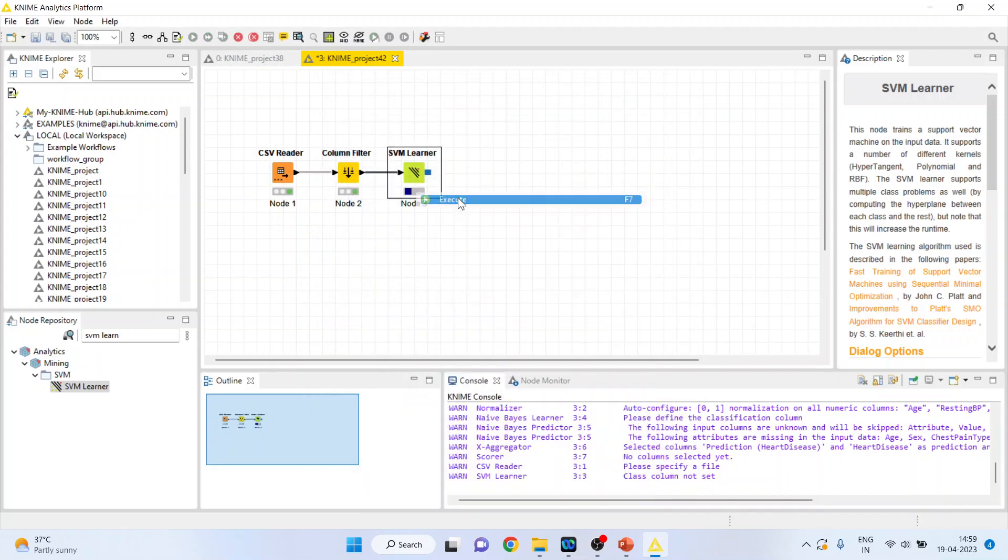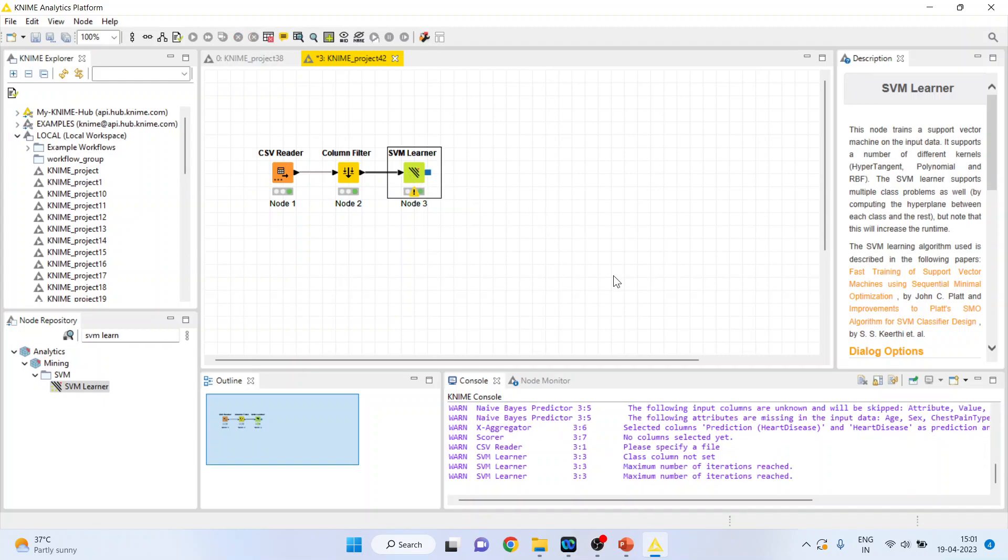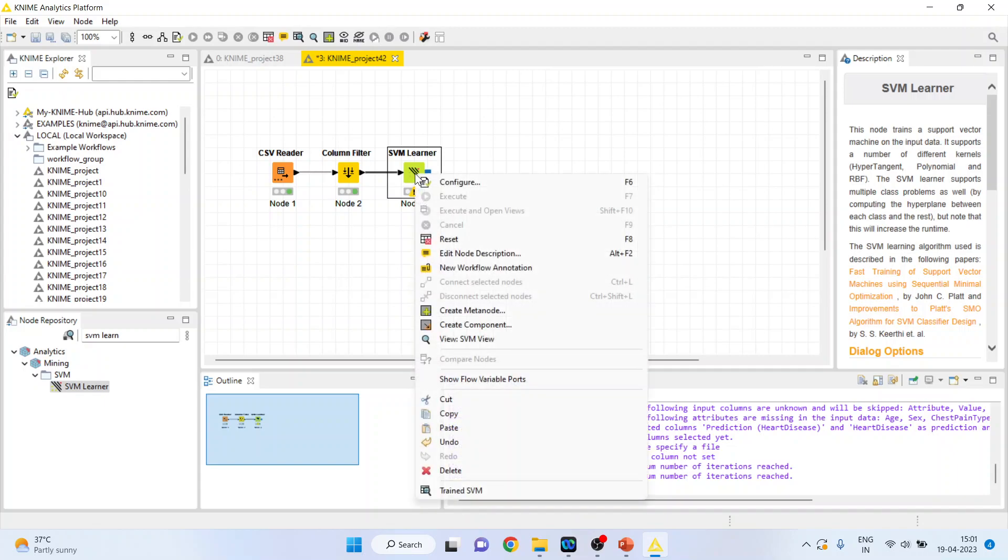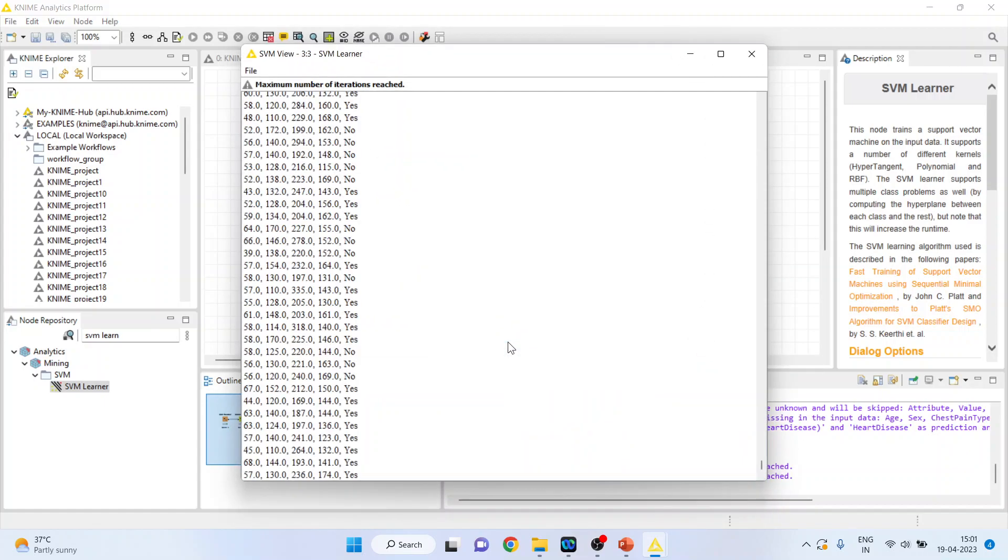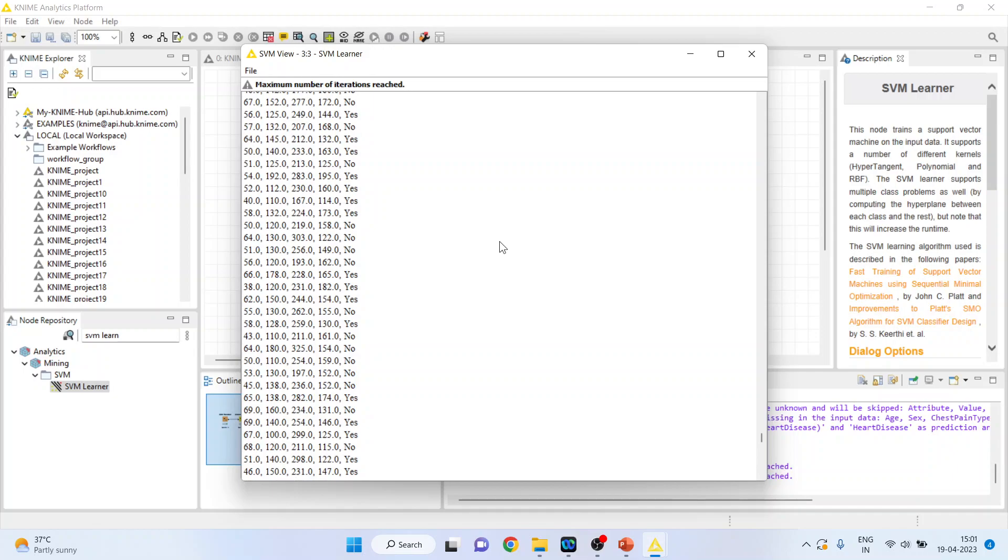Right click on it and execute. So the model is ready. SVM learner does not create the equation like regression analysis or logistic regression analysis. You can just click on view and you can see it does not create any model.